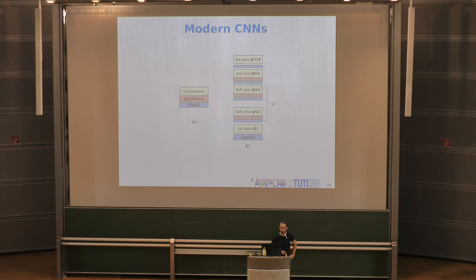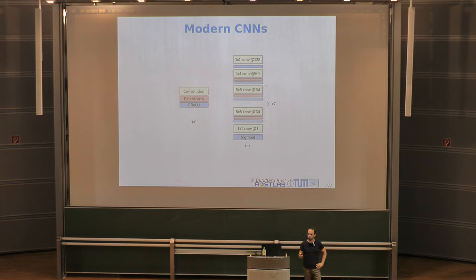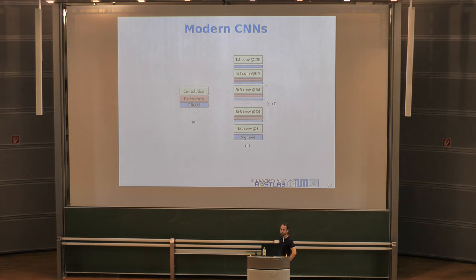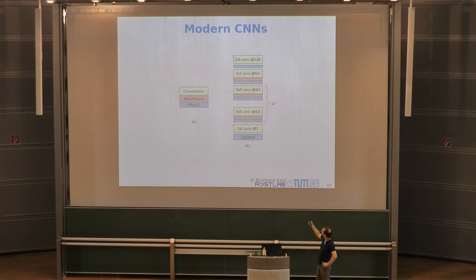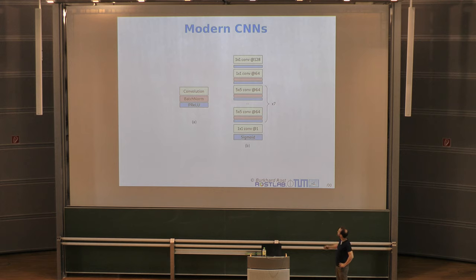Looking at more modern CNNs: a basic building block consists of a convolution kernel, batch normalization, and a nonlinear activation function such as PReLU or ReLU. Batch normalization is important when going deeper, as it helps counteract problems like vanishing gradients. A full architecture for contact prediction has three stages: an input stage, the main backbone, and an output stage. The input stage is a feature compression stage — necessary because some samples can be gigabytes in size.